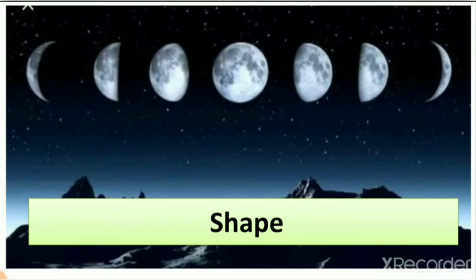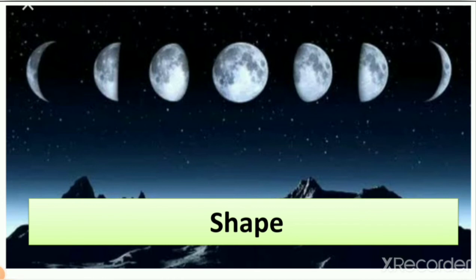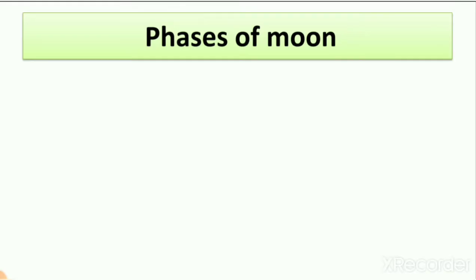The next hard word is 'shape,' spelled S-H-A-P-E. You have also learned about different shapes in maths. In this lesson we learn about the different shapes of the moon. The shape of the moon changes every day — half moon, quarter moon, full moon. All these shapes we learn in this lesson.